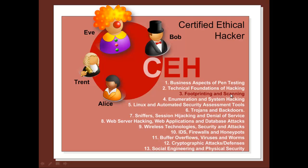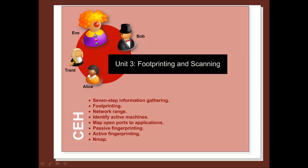Let's look at the third unit within the CEH certification. For this we'll have a look at footprinting and scanning. The main parts covered in this unit are the seven-step information gathering process, footprinting to determine the network range, identifying active machines, looking for open ports, passive and active fingerprinting, and then having a look at Nmap.